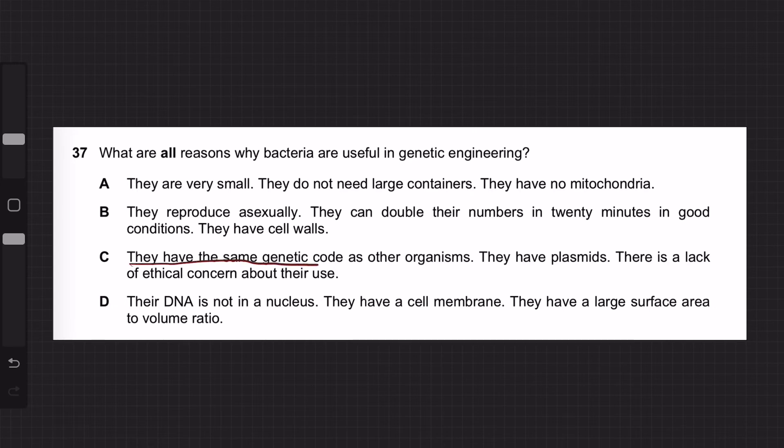They have the same genetic code as other organisms. And bacteria have plasmids. Plasmid is a genetic material that we can put our genes into. Plasmid is basically a fragment of DNA. Bacteria have their own DNA as well as plasmid. Plasmid is a very small fragment.